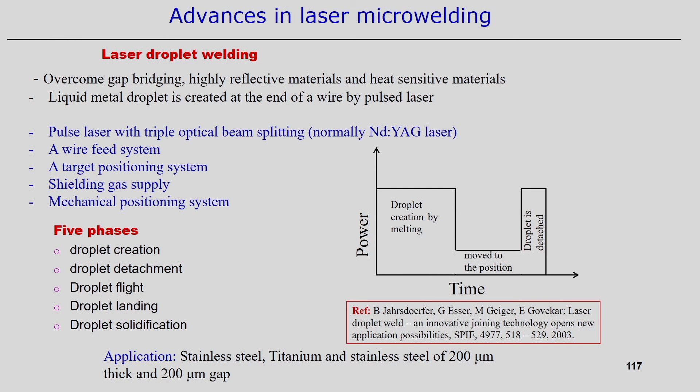In laser droplet welding, a liquid metal droplet is created and projected onto a particular position at the end of a wire using a pulsed laser. During the pulse energy period, droplet transfer happens and the droplet is transported to a specific position — useful for very high heat-sensitive materials or when there is a gap between two components, so two metals can be joined using this droplet.